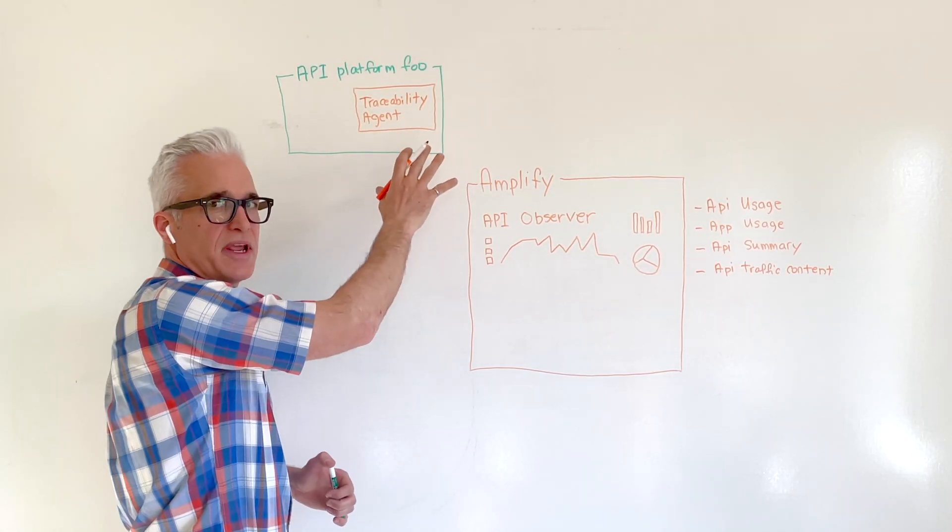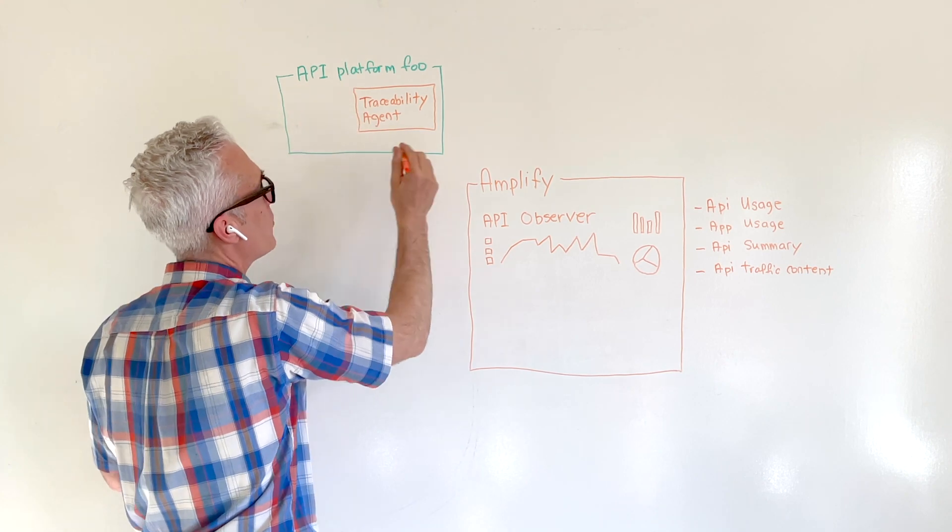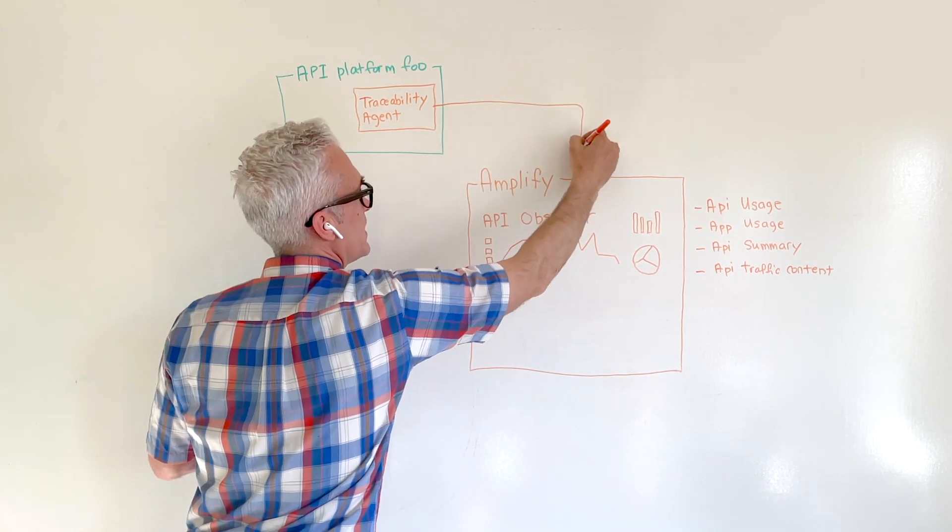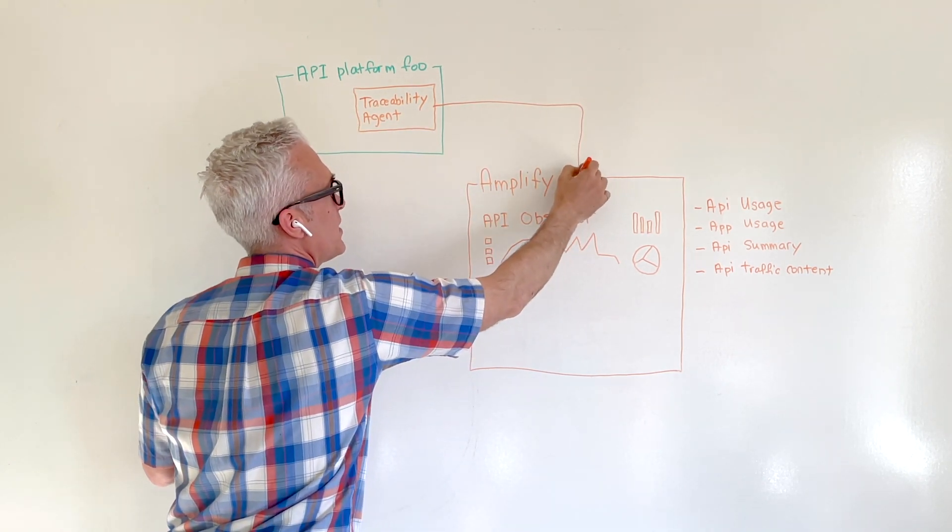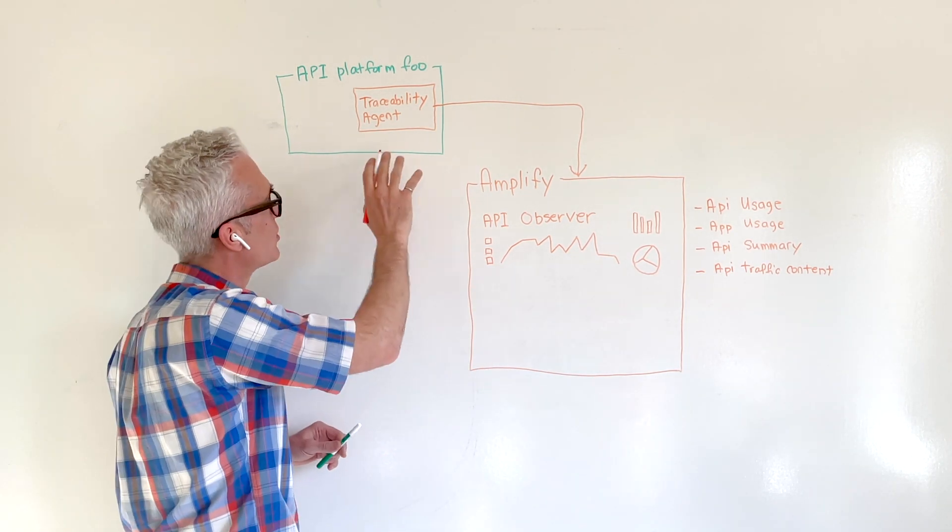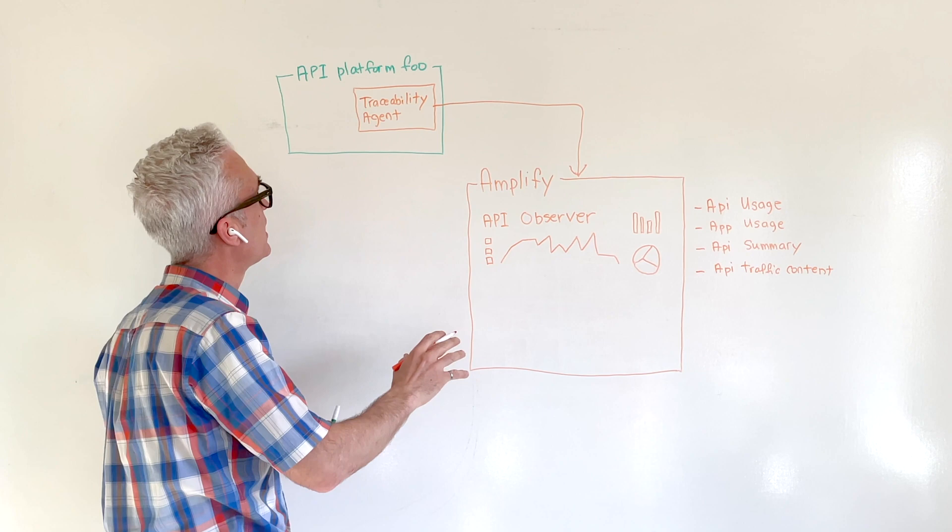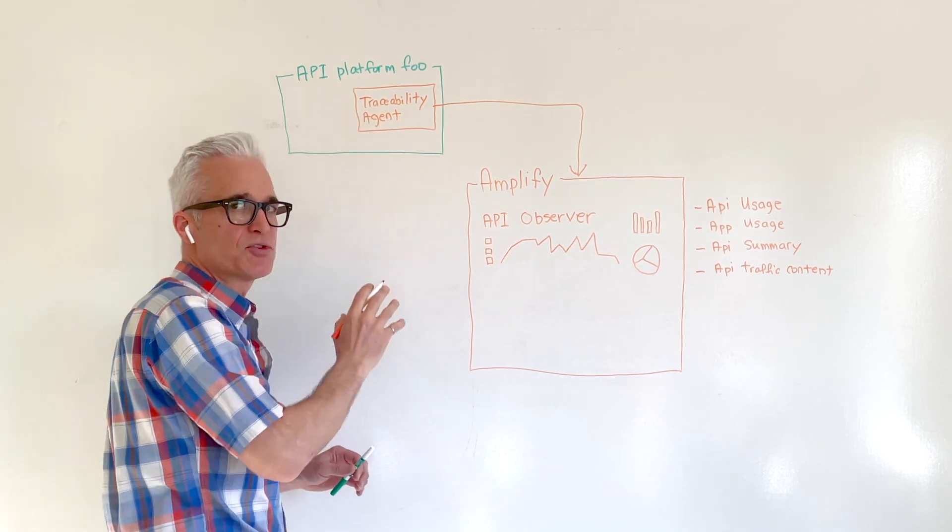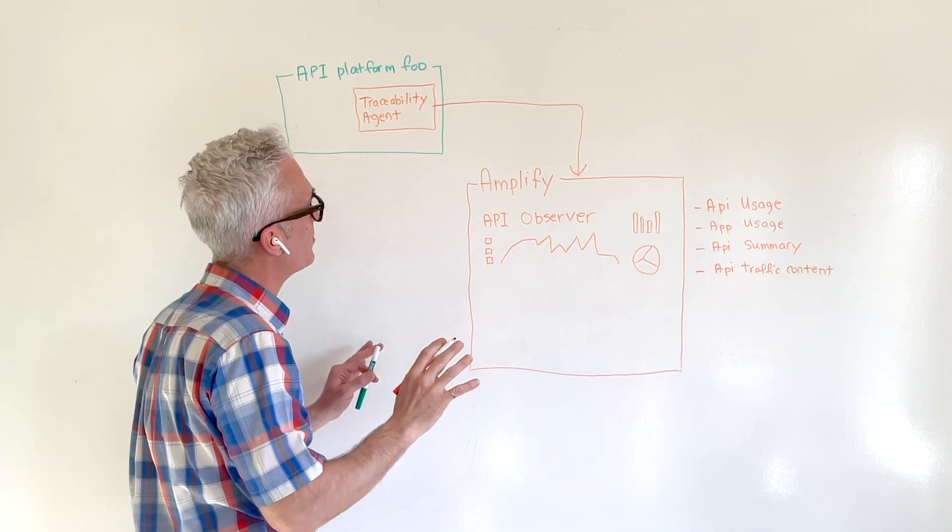Through this traceability agent, API traffic information is fed into API Observer. This doesn't require you to route your API traffic any differently. This traceability agent captures the data completely out of band.